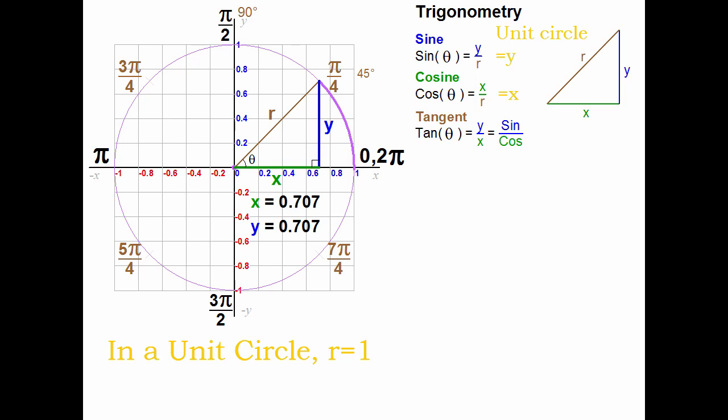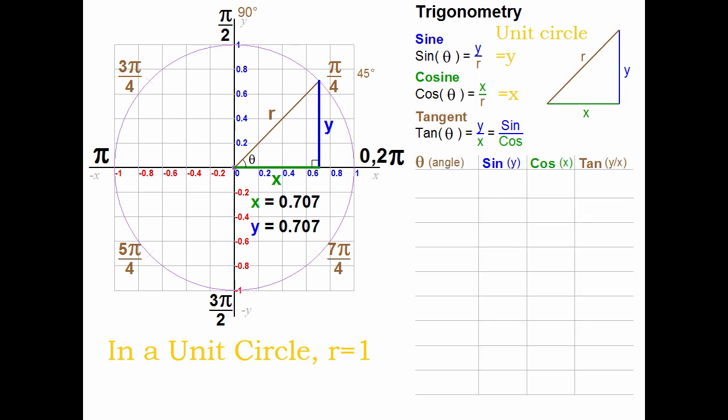Let's make a table to write down what we've calculated, or can observe. We'll list angle, sine, cosine, and tangent. This is where visualizing the unit circle is super helpful. Let's start with 0 degrees. Look at our point on the circle. At 0 degrees, what is the y-coordinate? It's 0. That's the sine. What's the x-coordinate? It's 1. That's the cosine. The tangent is y over x. 0 over 1 is 0.